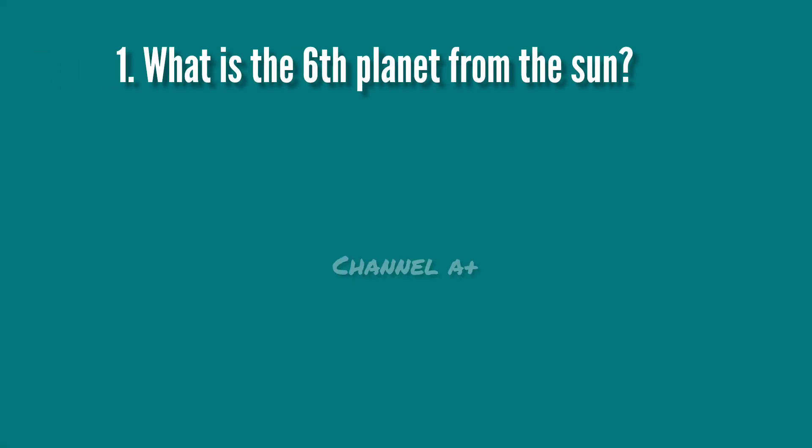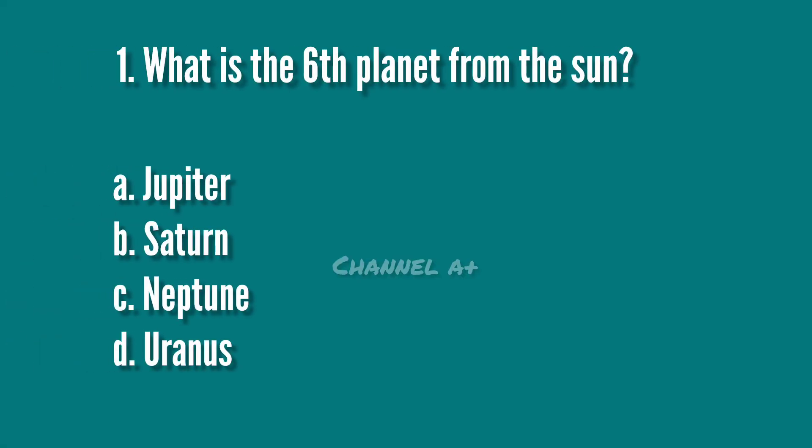What is the 6th planet from the Sun? A. Jupiter. B. Saturn. C. Neptune. D. Uranus. The answer is B. Saturn.